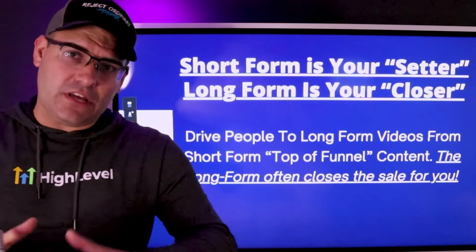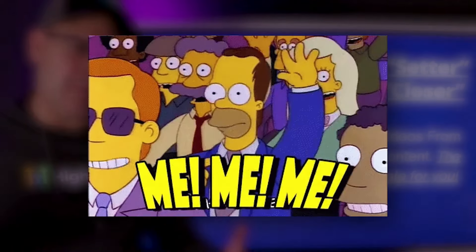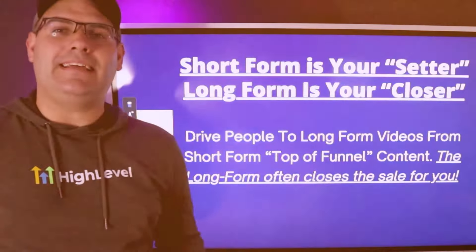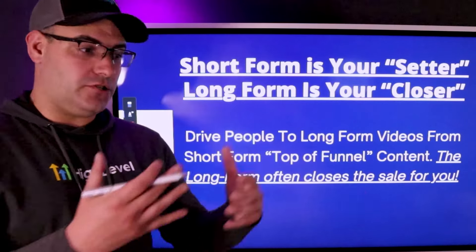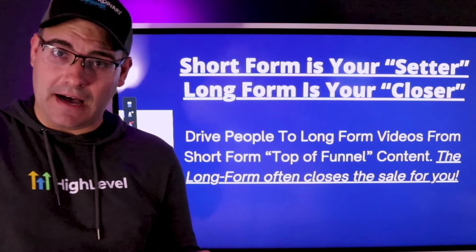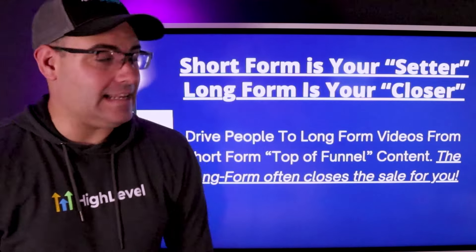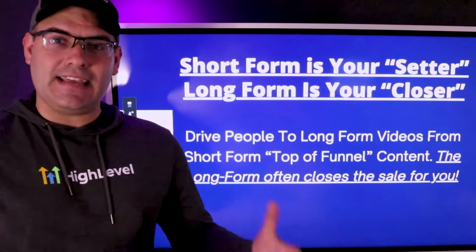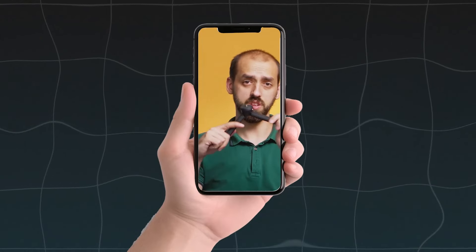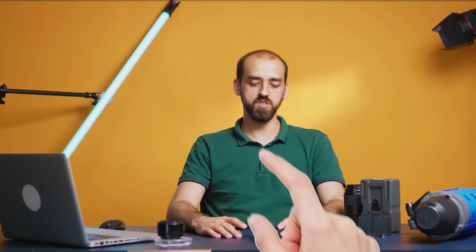When you post a short form video on social media and the algorithms carry it far and wide, you're basically getting people to raise their hand and qualify themselves — saying 'yeah, I want to hear more.' That's essentially your set call: you generate a lead, the setter qualifies the person, makes sure they have the desire and need to buy, and then sets them up with a close call. Same thing works with content: your short form basically tells the person 'hey, if this is you, I can help — drop a comment if you want help.' They comment, and then you send them over to your long form, which is your close presentation.